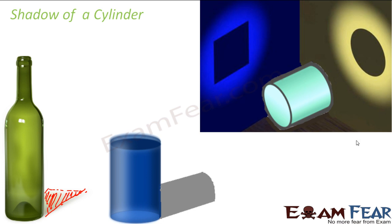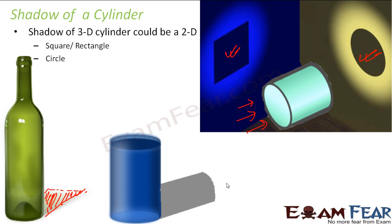Now if light is coming from this direction, in that case, this would be the shadow of the cylinder. But if light is coming from this direction, in that case, the circle would be the shadow of the cylinder. Therefore, it depends from which direction light is falling on that three-dimensional object.